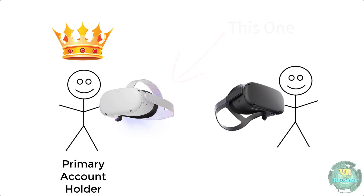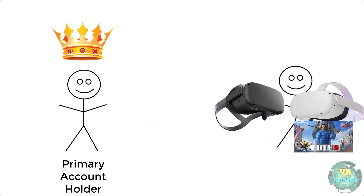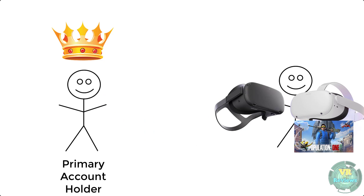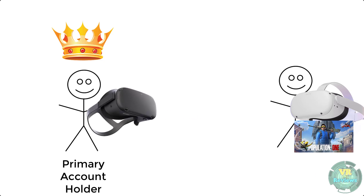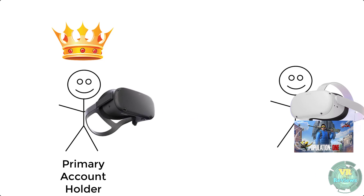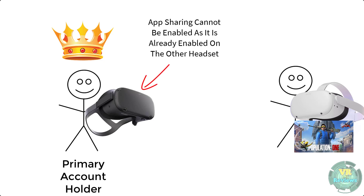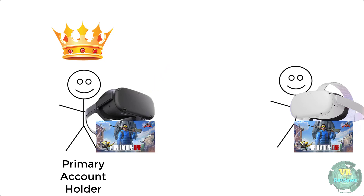If you want to play a multiplayer game with only one copy, the primary account holder buys the game and a secondary account is created on their headset. Since app sharing can only be enabled on one headset, the secondary account holder plays the multiplayer game on that headset, while the primary account holder logs into their account on the second headset — where app sharing isn't needed since they own the game anyway. Just note that the multiplayer game will need to support playing one copy across two headsets.